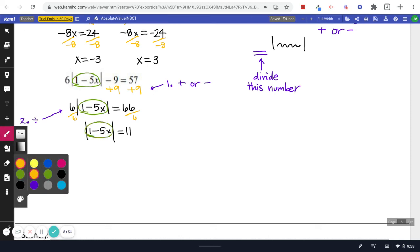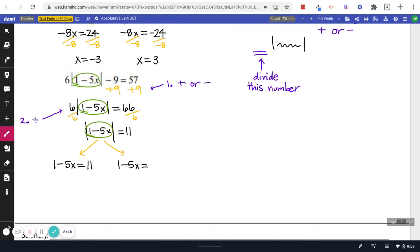Now we can unlock it. I'll open it up. And 1 minus 5x is 11 away from 0. That means it's either at positive, excuse me, it's either at positive 11 or 1 minus 5x is 11 away from 0. It's at negative 11.